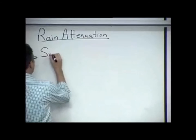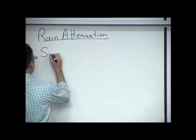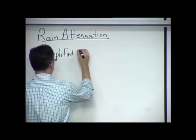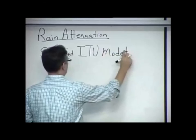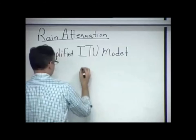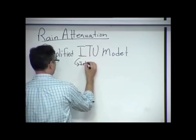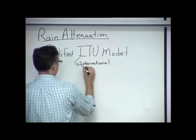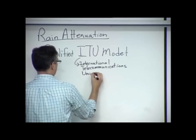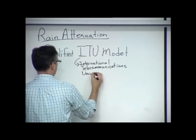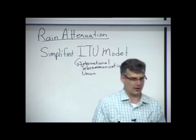So what I'm going to teach to you now is what I like to call the simplified ITU model for rain attenuation. ITU is the International Telecommunications Union. It's a standardizing body that comes up with standards and recommended practices that govern telecommunications across the world. And they've got a nice model, a basic model, that I've simplified even a little bit more.